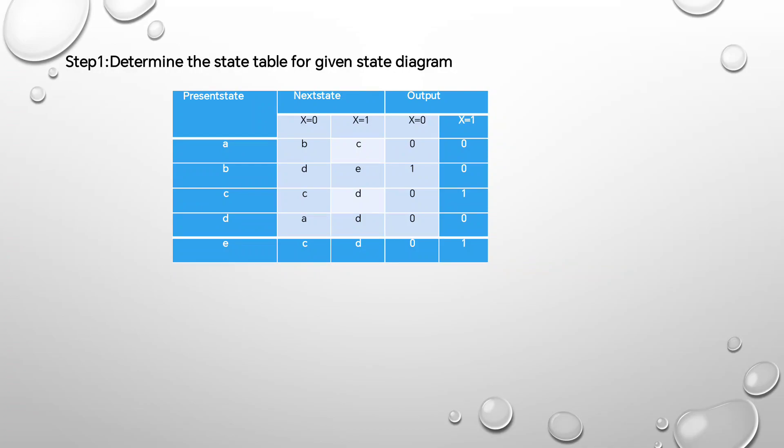Step 1: Determine the state table for the given state diagram. From that diagram we have to draw the table with present state, next state, and output.